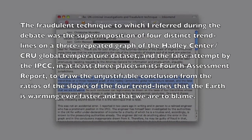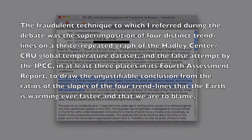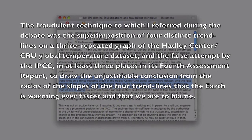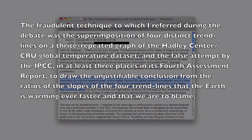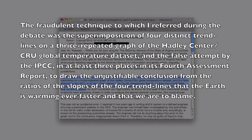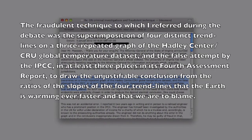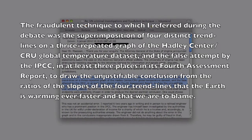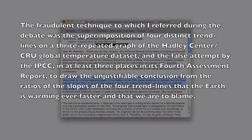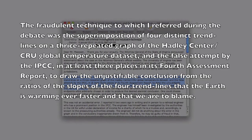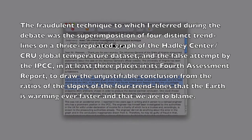The fraudulent technique to which I referred during the debate was the superimposition of the four distinct trend lines on a thrice-repeated graph of the Hadley Center/CRU Global Temperature Dataset, and the false attempt by the IPCC, in at least three places in its fourth assessment report, to draw the unjustifiable conclusion from the ratios of the slopes of the four trend lines that the Earth is warming ever faster and that we are to blame.